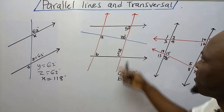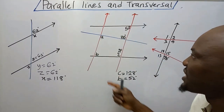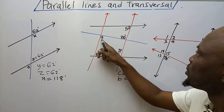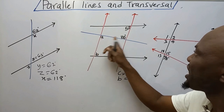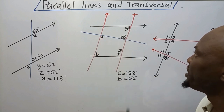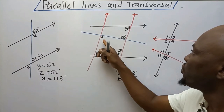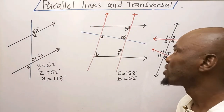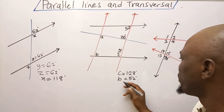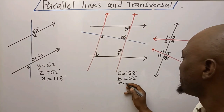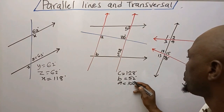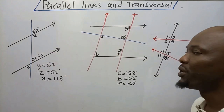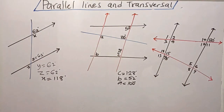Now looking at this pair of parallel lines with a transversal: on opposite sides of the transversal, inside the parallel lines, the relationship between these two angles is that they are alternate interior angles. So A is equal to 100 degrees. The reason is alternate interior angles.